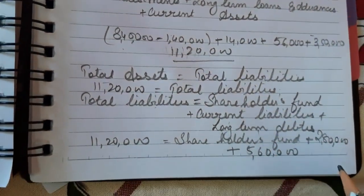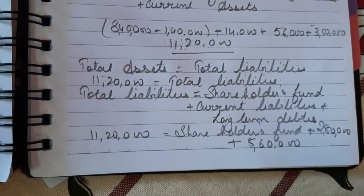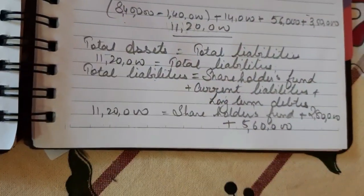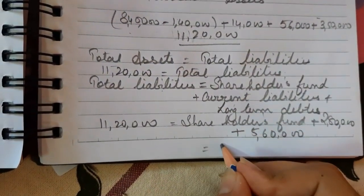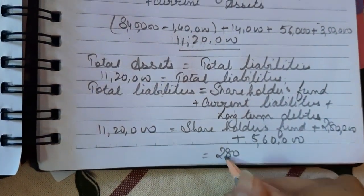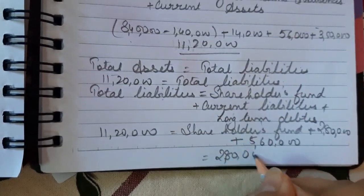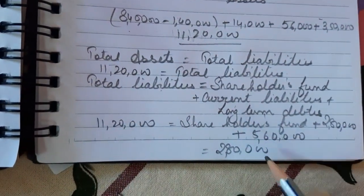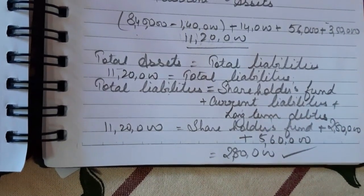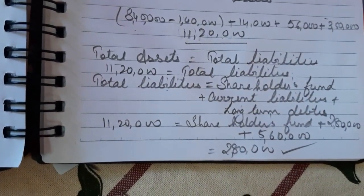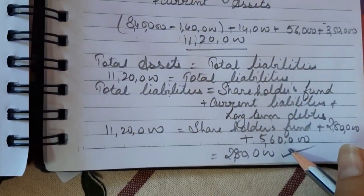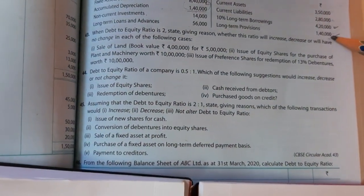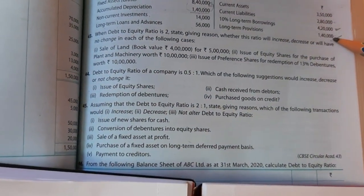After deducting current liabilities and long-term debts (5,60,000) from total liabilities (11,20,000), shareholders fund = 2,80,000. Long-term debts = 5,60,000.